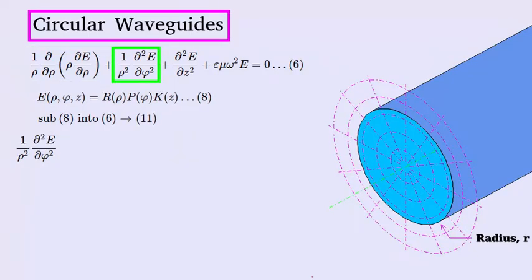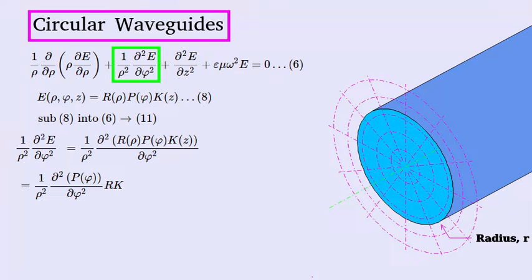Now we'll evaluate this second part of the equation. We'll make this substitution. Functions R and K are like constants compared to phi and may be taken out of the differential like this. We can write it out in d notation like this since there is only one differentiating variable. We can rewrite it out in slash notation to make it easier to write.